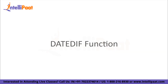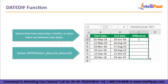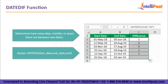We'll move on to our next function, the DATEDIF function. It determines how many days, months, or years there are between two dates. The syntax is: DATEDIF(start_date, end_date, unit). The start date is a date that serves as the first day or beginning of a period. The end date is the period's final or end date. The unit is the kind of information you want returned.